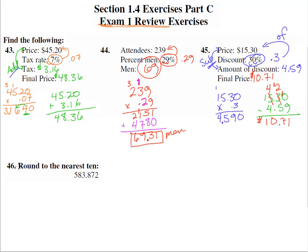Number 46: round to the nearest ten. Let's look at the columns. Here's the ones column, there's the tens column. So we're rounding to the nearest ten, so we've got to look at the column right before it, and is that less than five? Yes it is. So between 580 and 590, this guy is closer to 580.